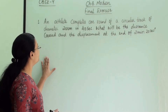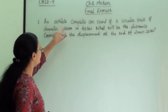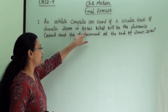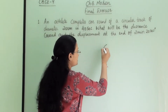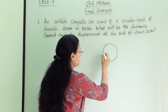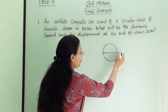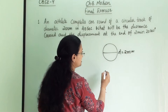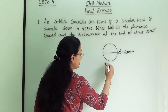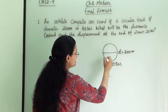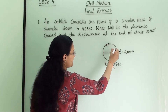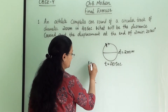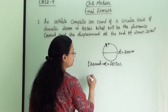This is the first numerical of the final exercise: an athlete completes one round of a circular track of diameter 200 meters in 40 seconds. So this athlete covers one round of diameter 200 meters, and he completes that round in a time of 40 seconds.